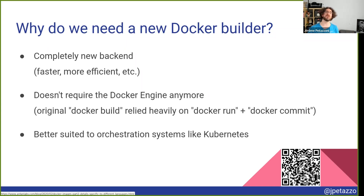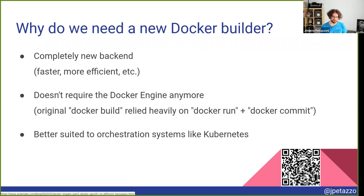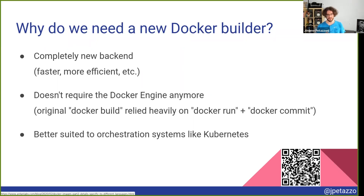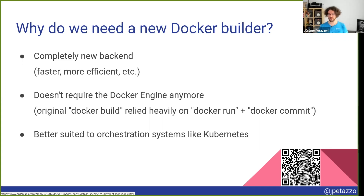For instance, when you have a Kubernetes cluster and you want to build images in that Kubernetes cluster, BuildKit is going to be pretty convenient for that. One thing that BuildKit will give us is also first-class support for multi-architecture builds and cross builds, which is going to help us if you want to run on Raspberry Pis, but also on ARM servers like the Graviton on AWS or Ampere on Oracle, or the new Apple Silicon M1 and M2 CPUs. More on that in a little while.